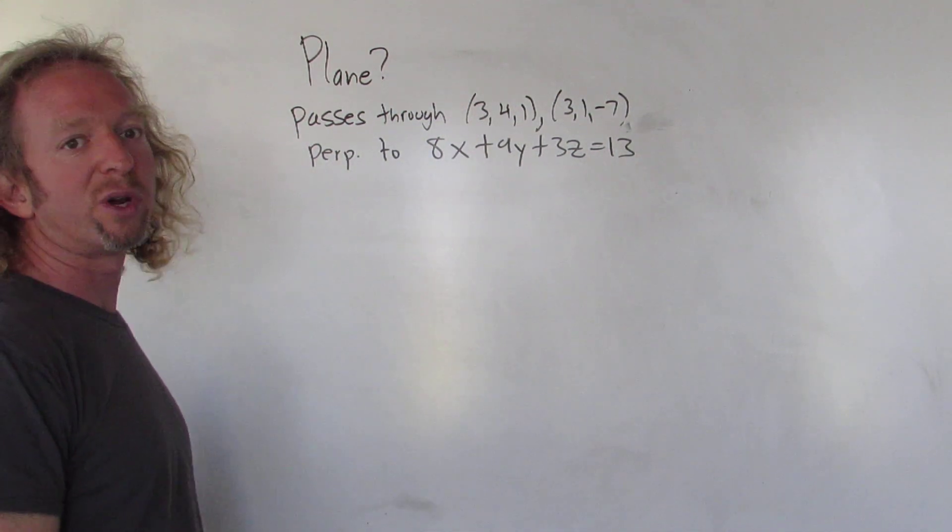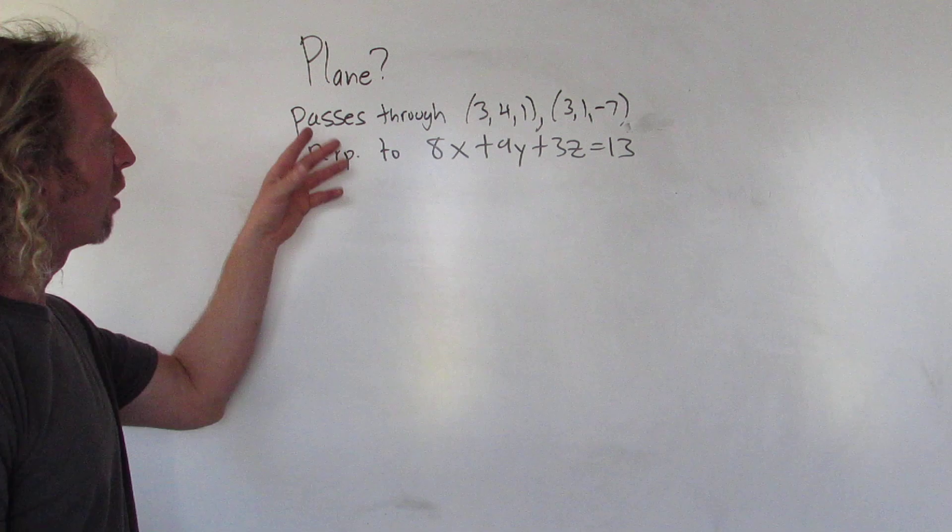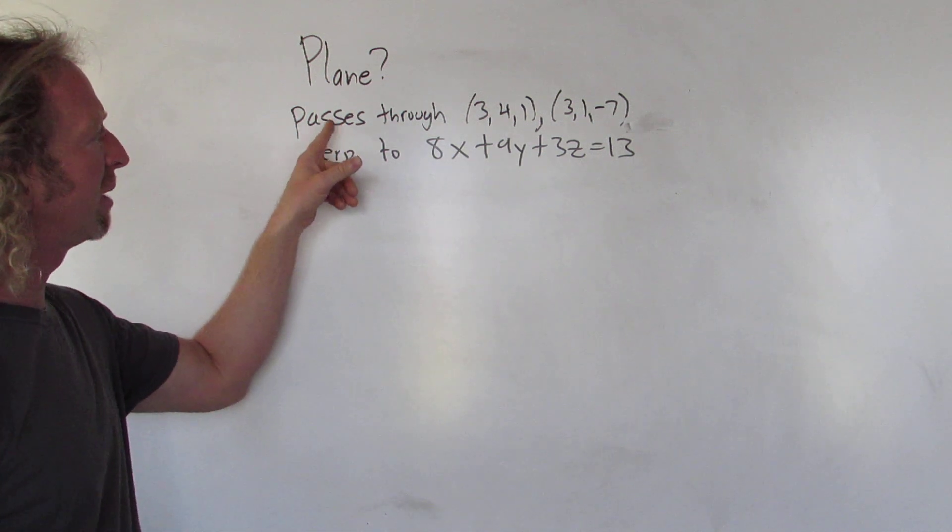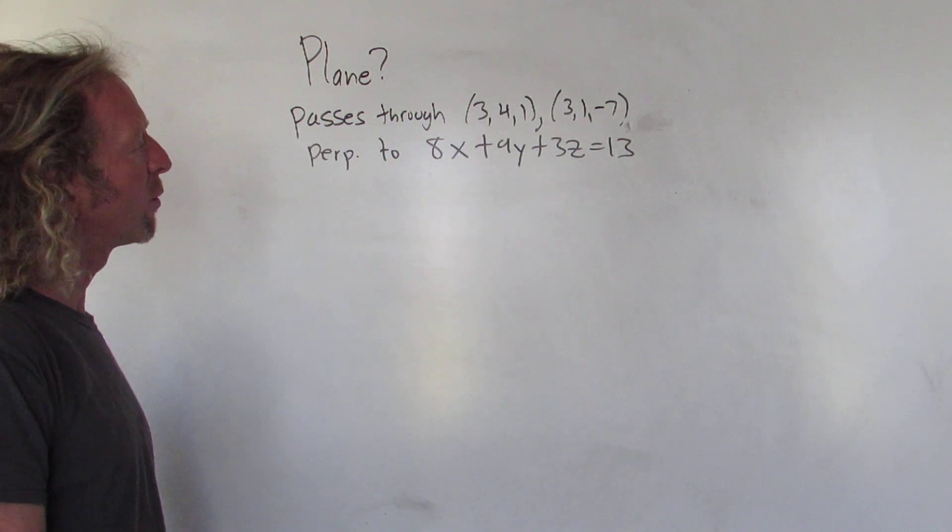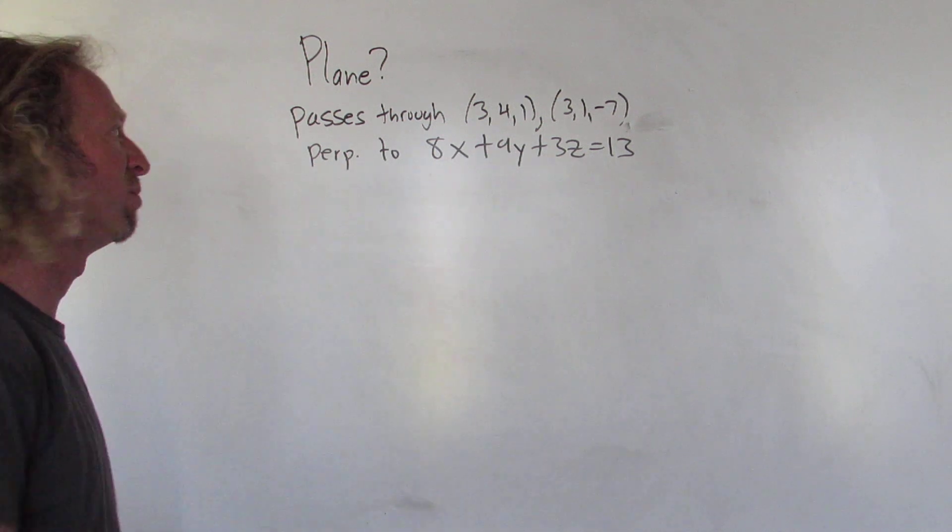Hey everyone, in this problem we're going to find the equation of the plane. So we're given some information, we're told that the plane passes through these two points, and we're told that the plane is perpendicular to this plane.